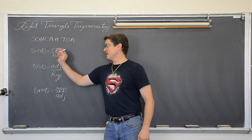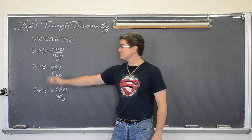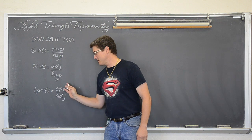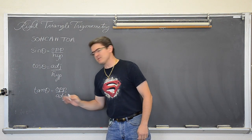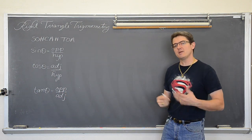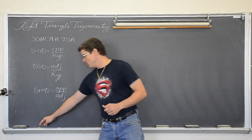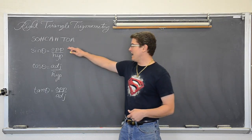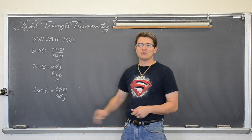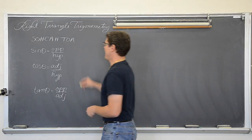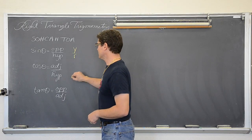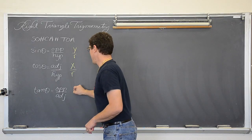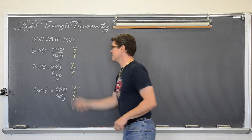The sine of theta is equal to opposite over hypotenuse, cosine of theta is adjacent over hypotenuse, and tangent of theta is equal to opposite over adjacent. Now if you have been keeping up with my videos, you might have noticed that a lot of the calculations we have been doing with these trig functions lately have been with y over r, x over r, and y over x.